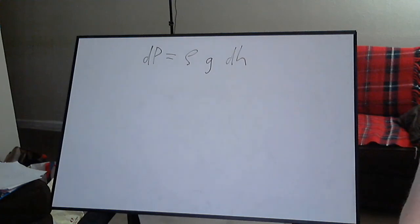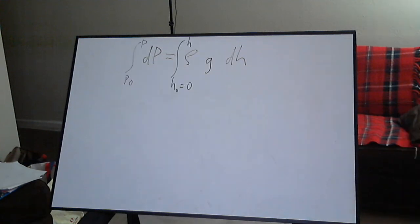We start with our differential equation, then integrate from our reference depth to the depth we are interested in finding the pressure for. Note that the constants can be taken out of the integral.